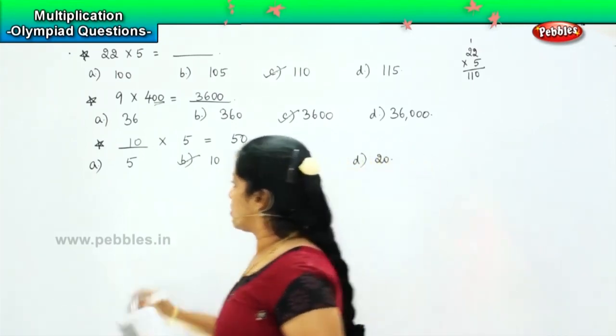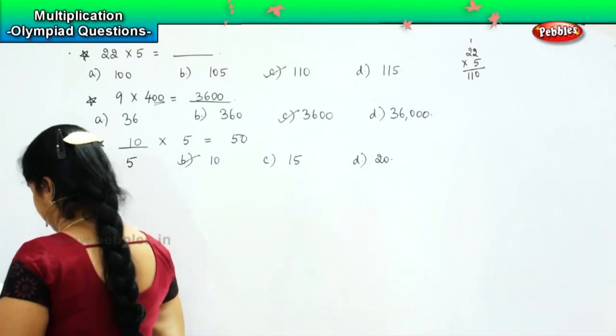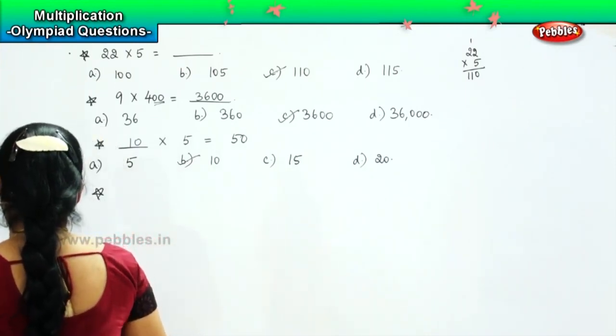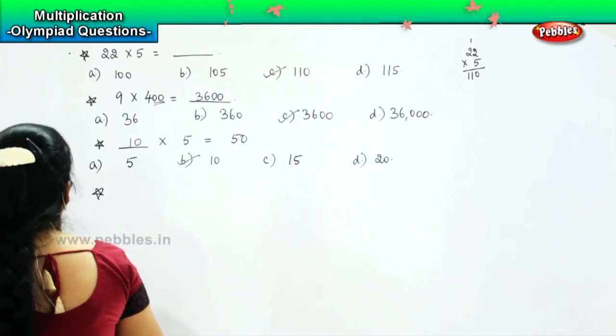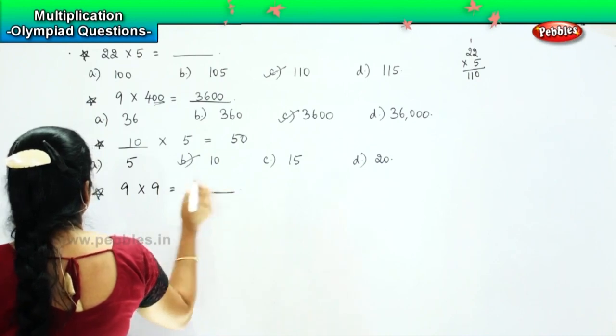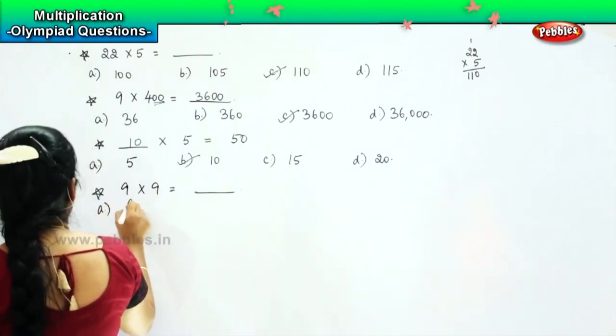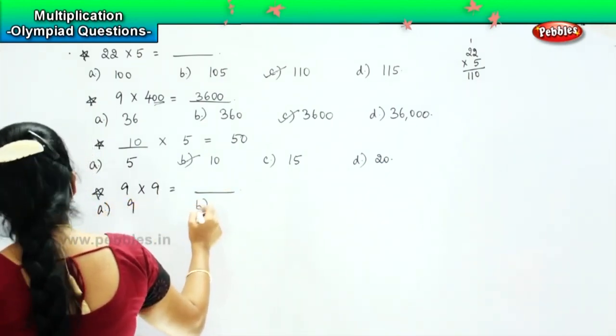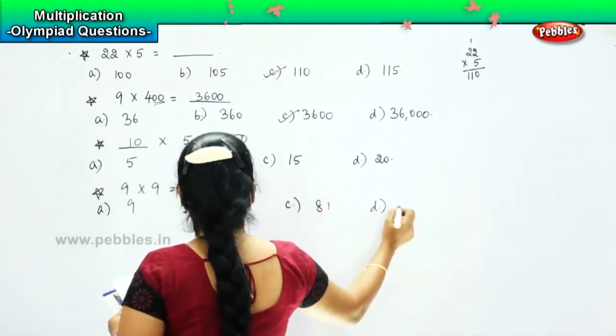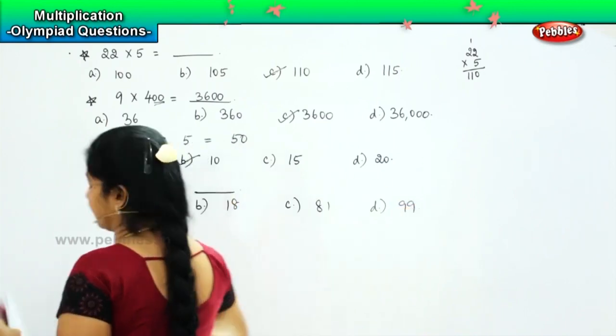So here is your next question. The question says 9 into 9 is equal to dash and the options given are 9, option B 18, option C 81 and option D 99.